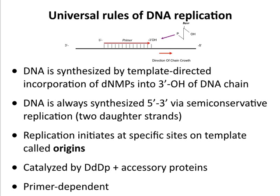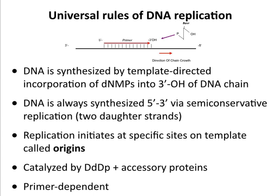DNA is catalyzed by DNA-dependent DNA polymerase and other proteins. You need a lot of other proteins — more than for RNA — though you don't need to know the names of them; just know that there are a lot of them and that sometimes the virus can supply them. DNA replication is always primer-dependent, which is different from RNA synthesis, which may or may not be primer-dependent. So those are our rules.